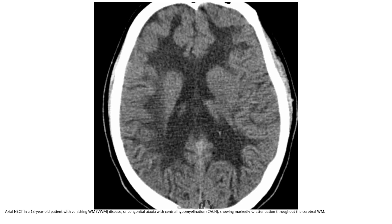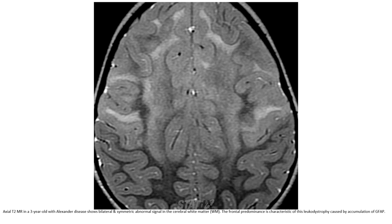Enhanced CT in a 13-year-old patient with vanishing white matter disease shows markedly decreased attenuation throughout the cerebral white matter. CT in a 3-year-old with Alexander disease shows bilateral and symmetric abnormal signal in the cerebral white matter. The frontal predominance is characteristic of this leukodystrophy caused by accumulation of GFAP.